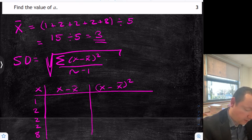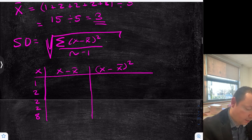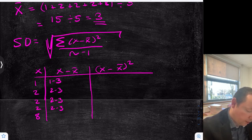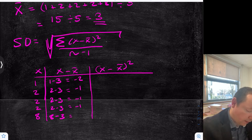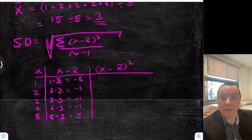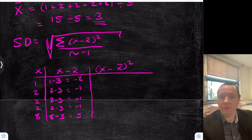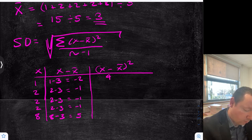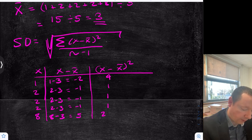In the middle column I'm taking away the mean — so I need to subtract 3 each time. So: 1 minus 3, 2 minus 3, 2 minus 3, 2 minus 3, 8 minus 3. Don't worry about getting negative answers — it's completely normal. That gives: minus 2, minus 1, minus 1, minus 1, and 5. The last column means to square them — times them by themselves. Ignore the signs because negative times negative gives a positive. So: 2×2 is 4, 1×1 is 1, 1×1 is 1, 1×1 is 1, 5×5 is 25.